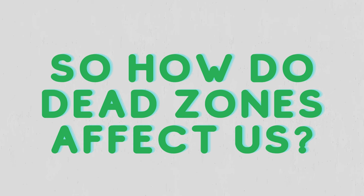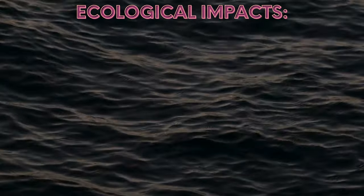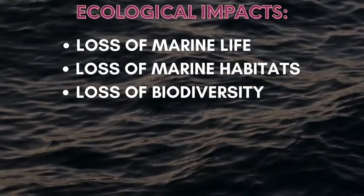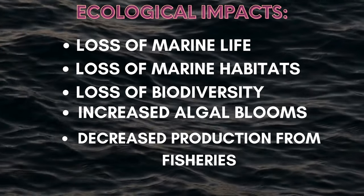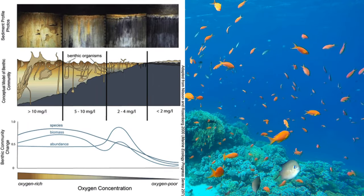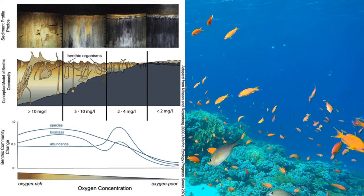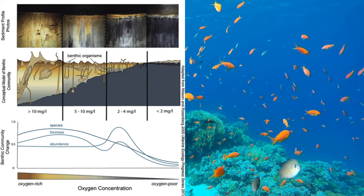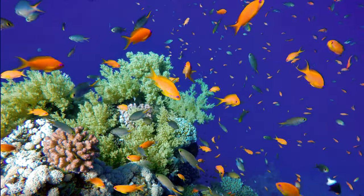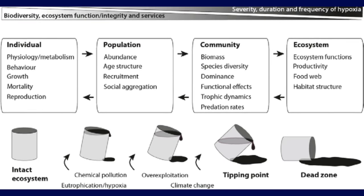There are several ecological impacts from dead zones, varying in severity of consequence. Some of the impacts are as follows: loss of marine life, loss of marine habitats, loss of biodiversity, increased algae blooms, and decreased production from fisheries. Loss of marine life is caused by less mobile organisms that are unable to tolerate low oxygen levels. The death of these organisms will impact the marine ecosystem food web and will lead to a change in species composition, reducing species diversity. This change in species composition leads to the loss of habitat, causing changes in population dynamics and shifts in population.